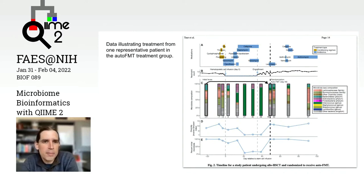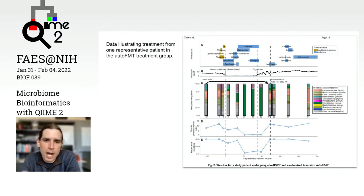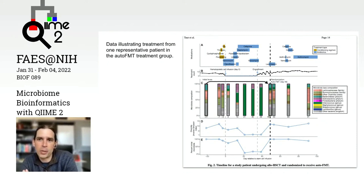The two plots on the bottom are similar to some of the analyses that we will be doing. For example, this is showing the change in diversity post-FMT, and this is showing that they have restored most of their pre-treatment microbiome post-FMT. Very interesting work, and there's lots of cool stuff that we can do and that we will do over the course of the week with this data set.